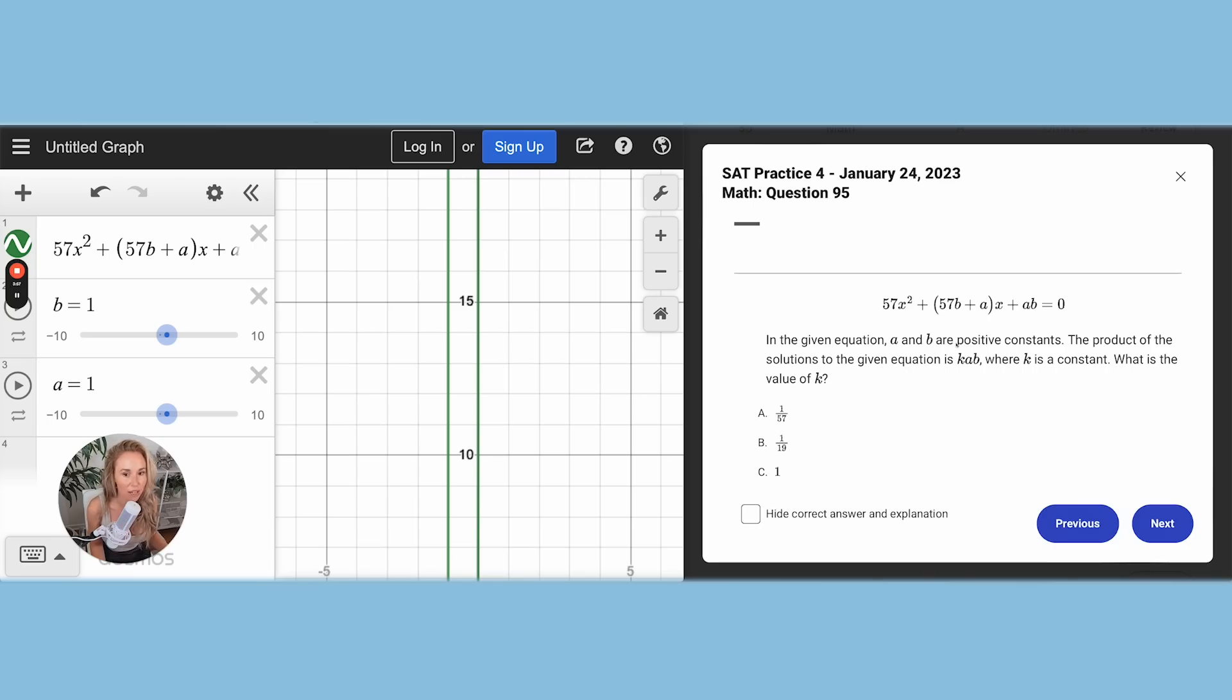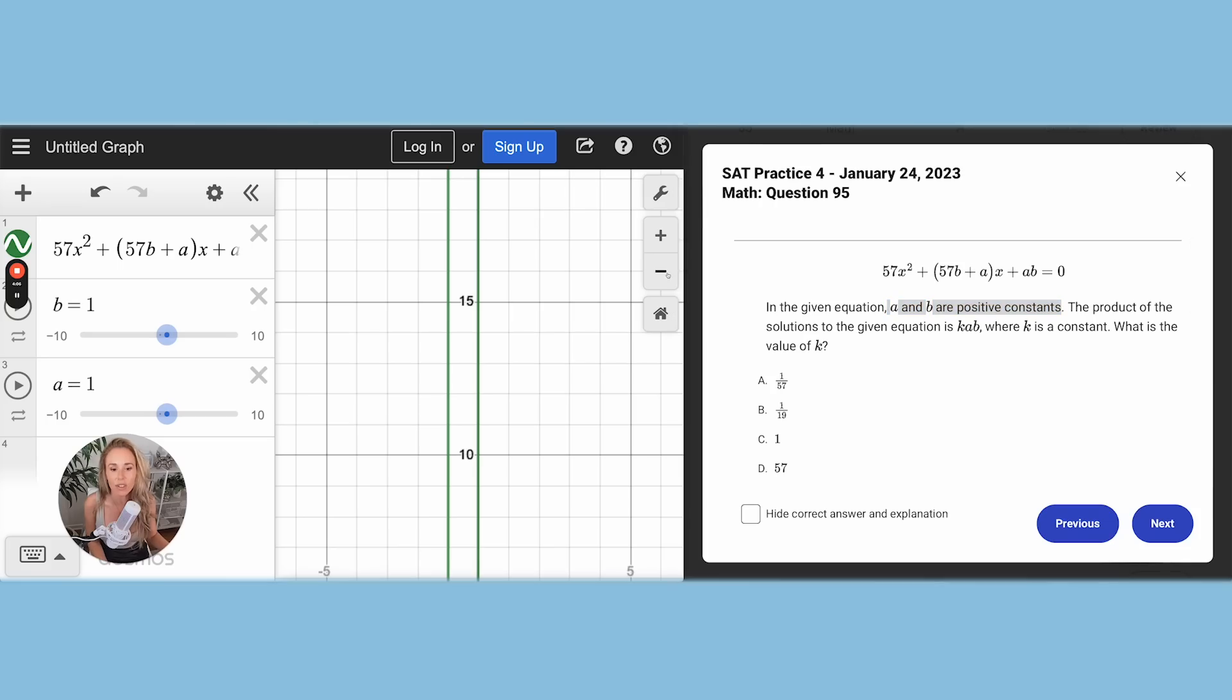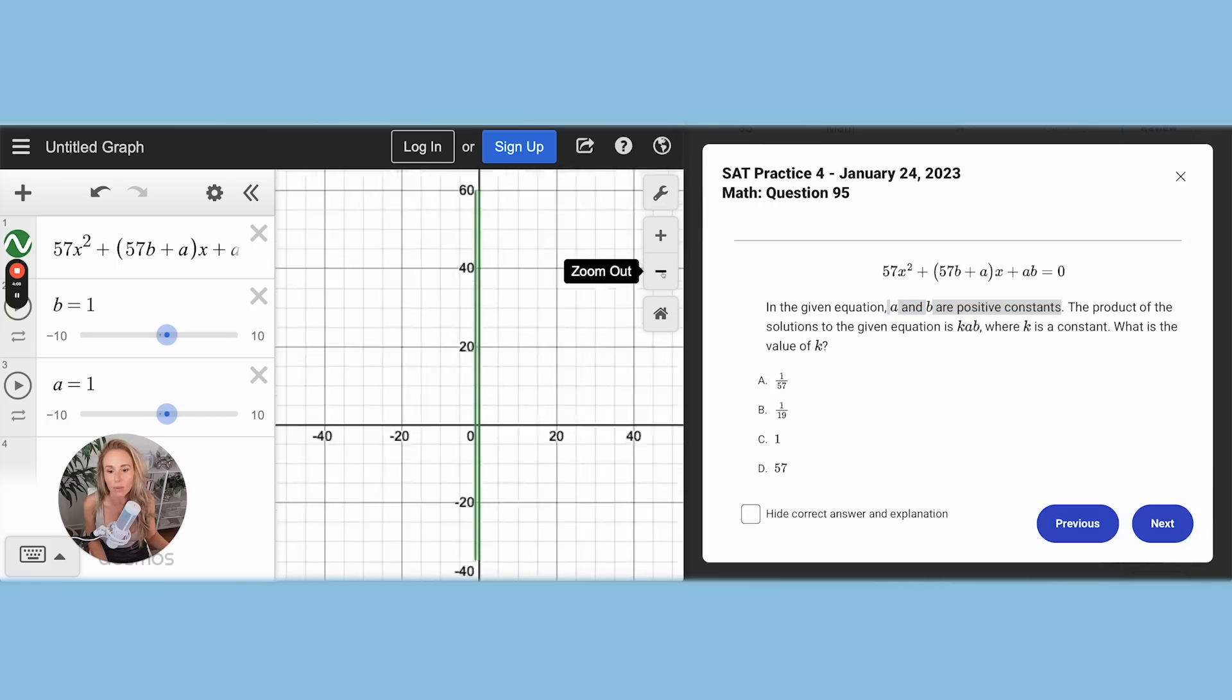Now, just make sure that you are doing what they're asking for. It says A and B are positive constants. Do you guys see that? So we just have to make sure that we keep A and B as positive numbers.